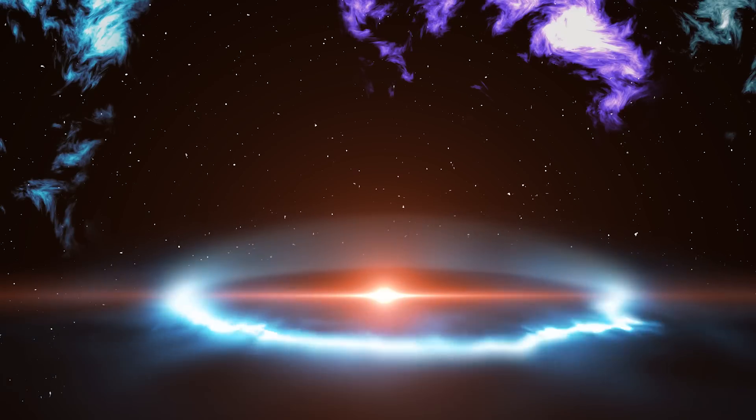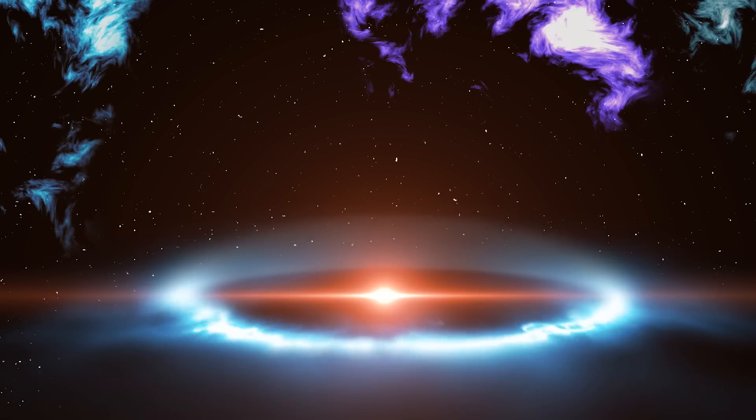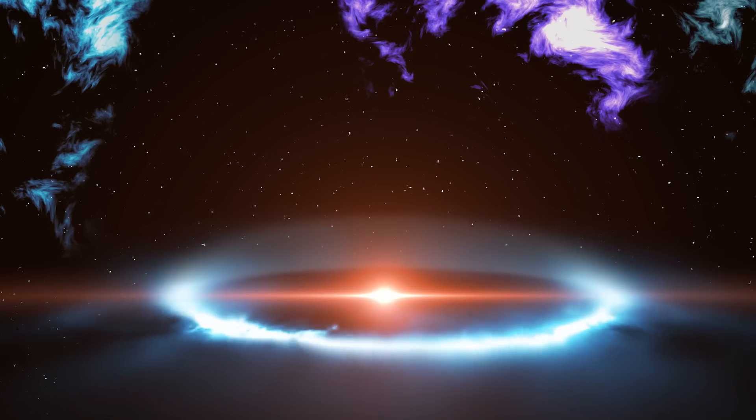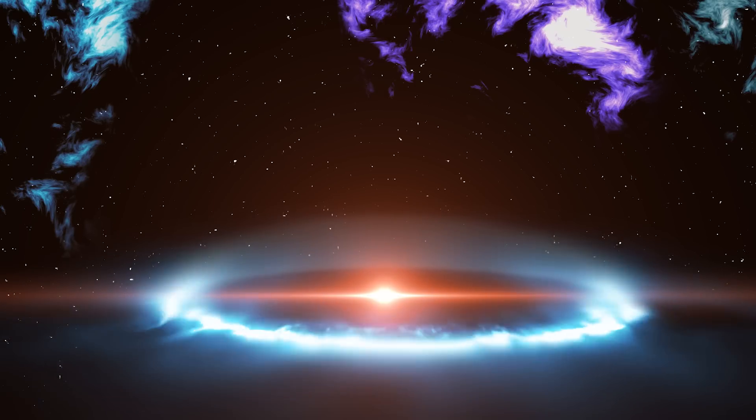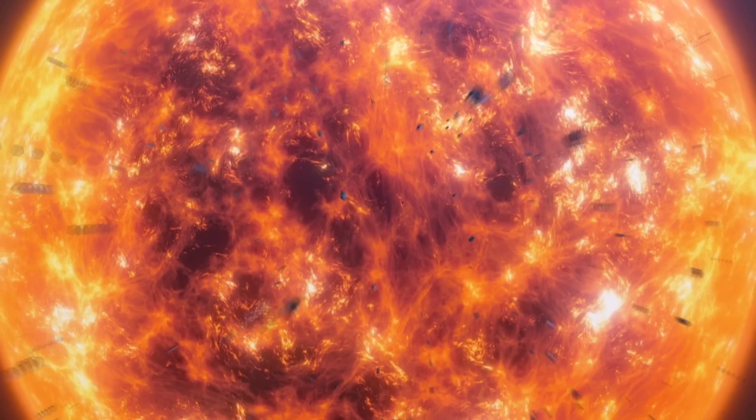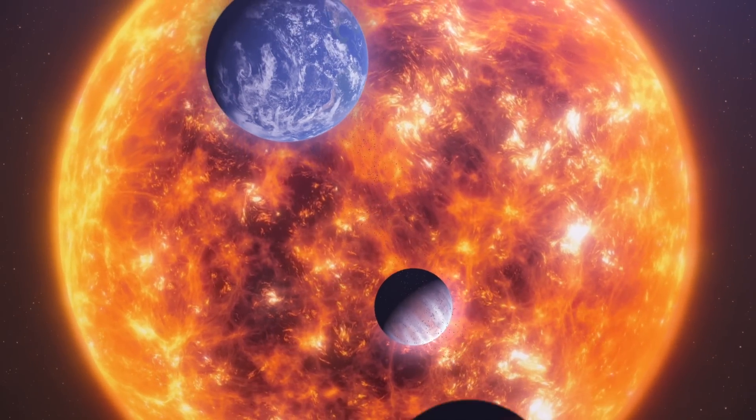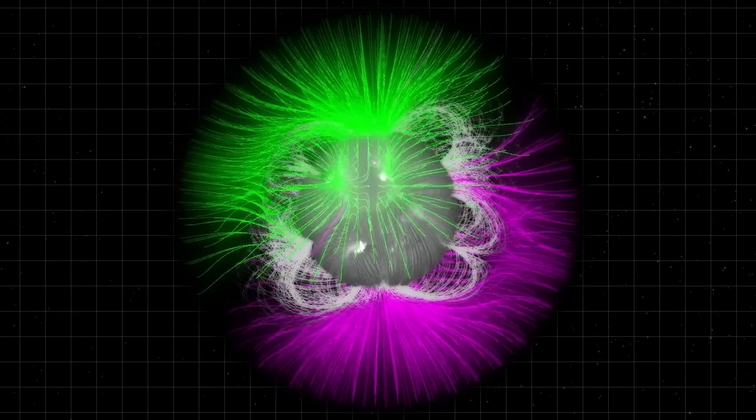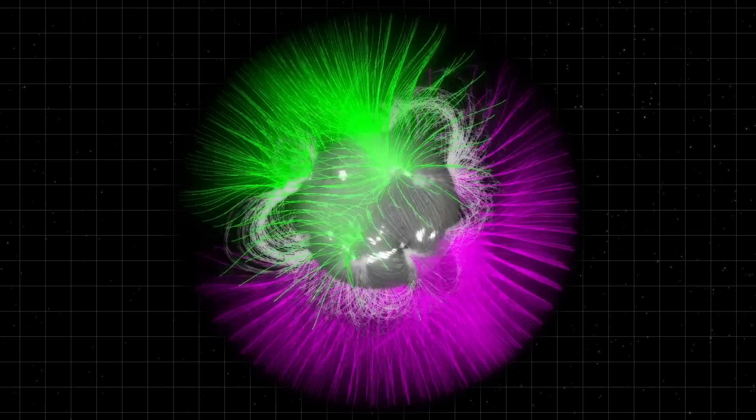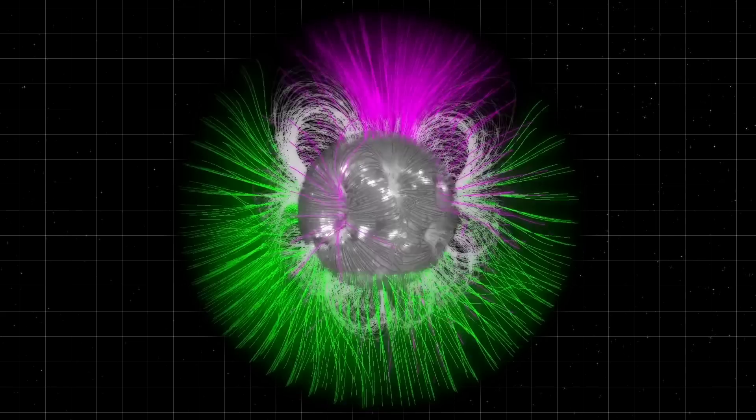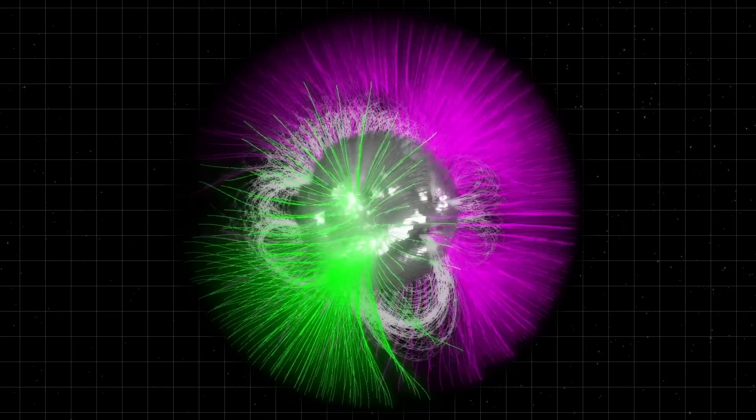However, the Sun's magnetic field reversal is not a sudden flip but rather a gradual process. As the solar cycle progresses, the Sun's magnetic field undergoes a series of changes. When the magnetic field is at its most twisted and tangled state, it reaches a tipping point and begins to reorganize itself, resulting in a flip.